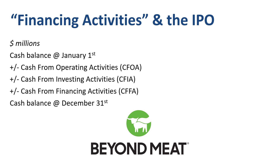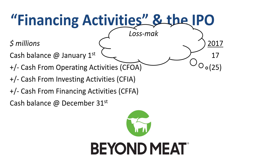The company started 2017 with $17 million in cash. The outflow in cash from operating activities of $25 million for the year was due to having a loss-making operation and growing working capital. In a company with spectacular revenue growth like Beyond Meat, accounts receivable, inventory, and accounts payable tend to grow as rapidly as revenue, which is a drain on cash flow.